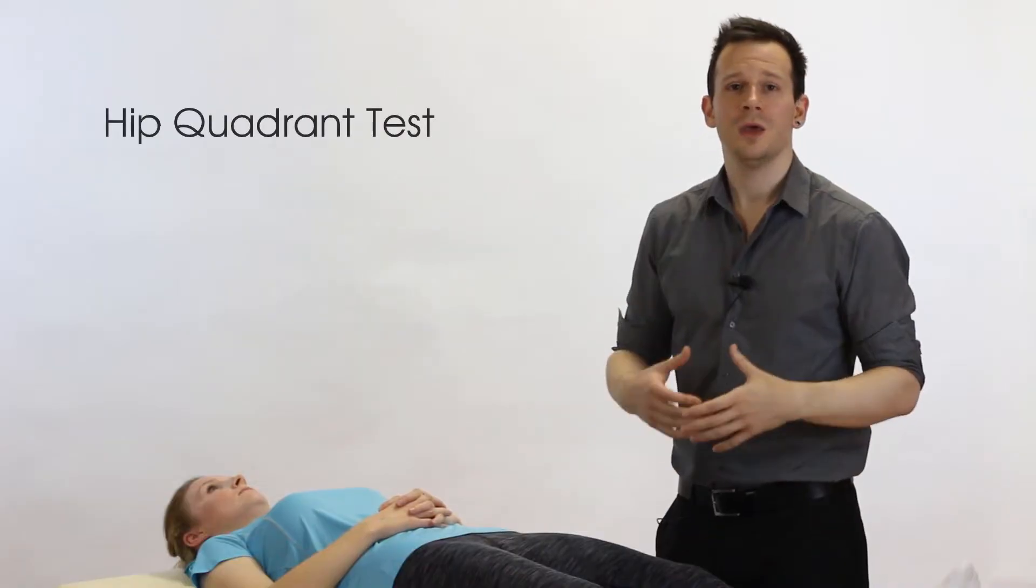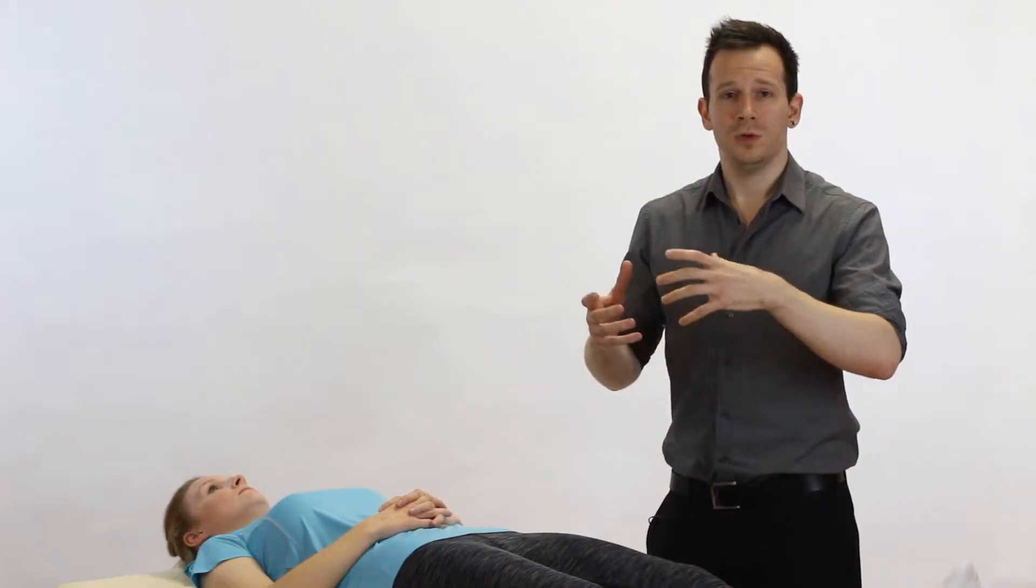Hey guys and welcome back to Clinical Physio with me, Phil Richards. In today's video we're going to be going through the quadrant test for the hip. So what is this test used for? Well, theoretically it's designed for detecting internal derangement of the hip joint.